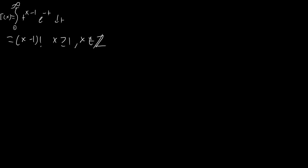What we're going to do is first consider gamma of x plus 1. This is equal to the integral from zero to infinity of t to the x, e to the negative t, dt. Next we're going to do integration by parts. We're going to integrate e to the negative t, giving negative e to the negative t, and keep t to the x the same, evaluating the boundary term from zero to infinity.